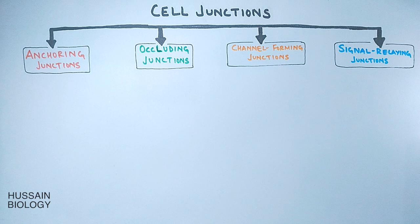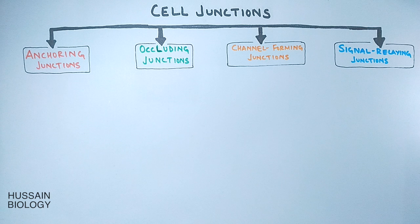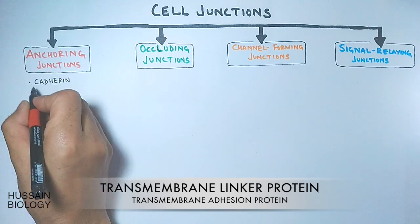Now let's explain anchoring junctions. As the name states, it is the type of cell junction which anchors the cell within the tissue — anchoring it with other cells and providing anchorage between a cell and a matrix. In anchoring junctions, anchoring proteins extend through the plasma membrane to link cytoskeleton proteins in one cell to the cytoskeleton proteins of a neighboring cell. There are two types of transmembrane linker proteins in this junction: cadherins and integrins.